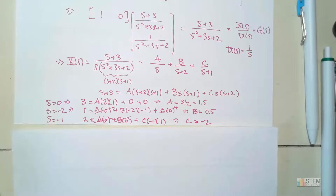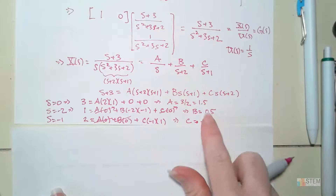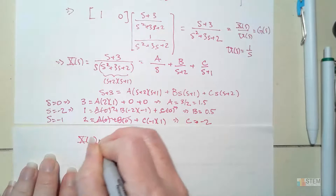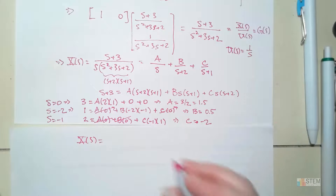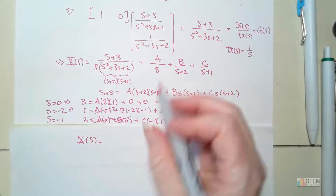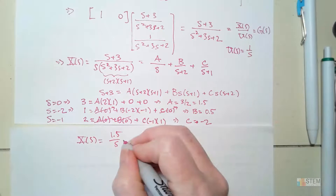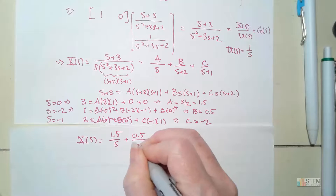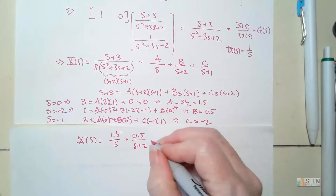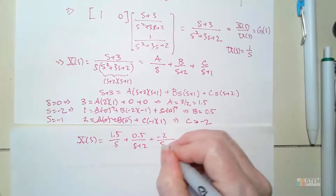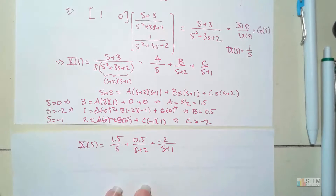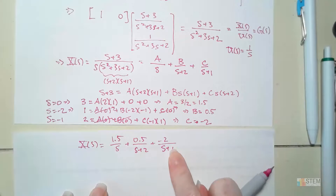Now we've found all three coefficients, so we rewrite X(S) using A, B, and C. X(S) equals 1.5/S plus 0.5/(S+2) plus (−2)/(S+1). Now we take the inverse Laplace to get X(T).